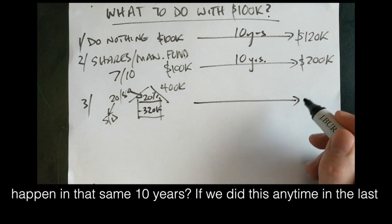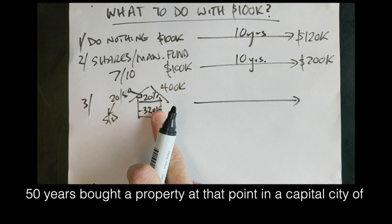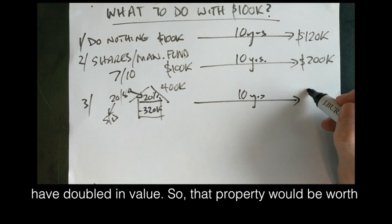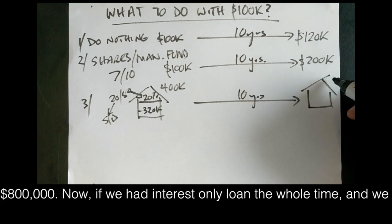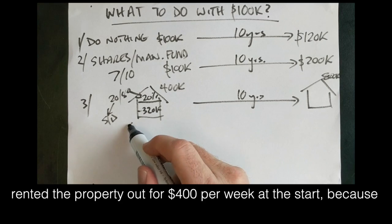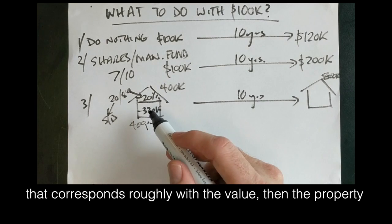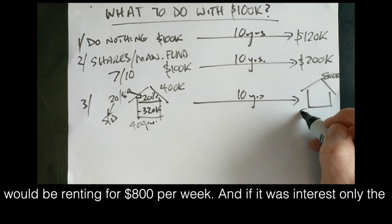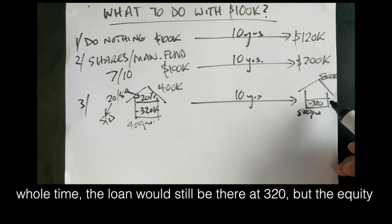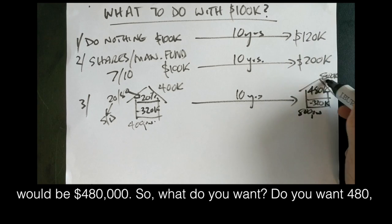Now what would happen in that same 10 years? Well, if we did this any time in the last 50 years, bought a property at that point in a capital city of Australia, in the last 50 years, in 10 years, that property would have doubled in value. So that property would be worth $800,000. Now if we had interest only loan the whole time, and we rented the property out for $400 per week at the start, because that corresponds roughly with the value, then the property would be renting for $800 per week, and if it was interest only the whole time, the loan would still be there at $320,000, but the equity would be $480,000.